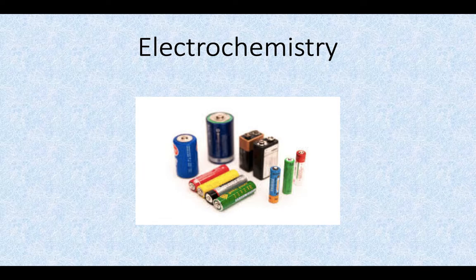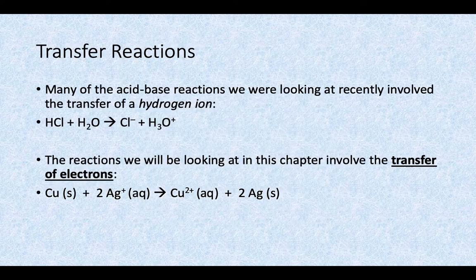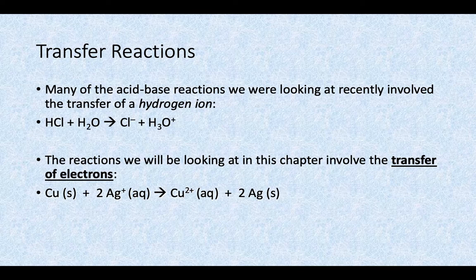Today we are going to start looking at our very last chapter in AP Chemistry — electrochemistry. In chemistry there are a lot of different types of reactions. The two big transfer-type reactions are what we end the school year with. We just finished a chapter on acid-base reactions, where all of those involved the transfer of a hydrogen ion.